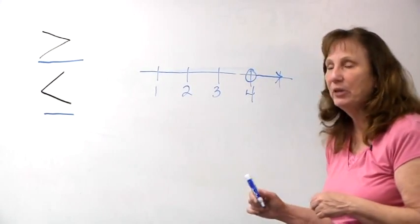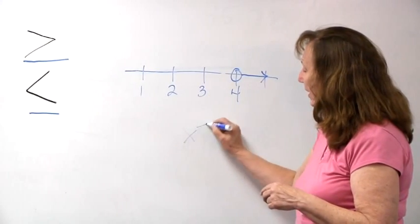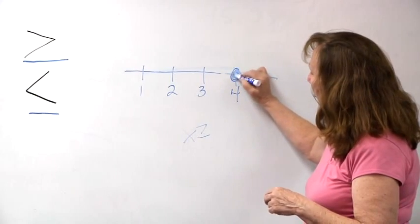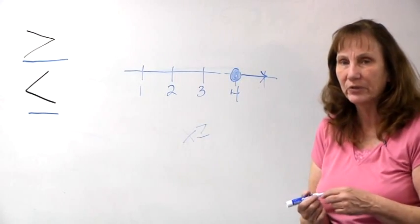If you want to say the number x is greater than or equal to 4, then you can close in that circle to show that it actually could have the value of 4 also.